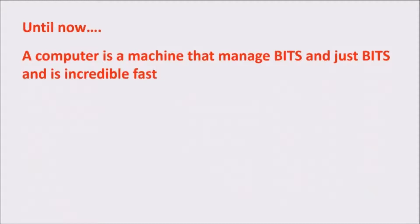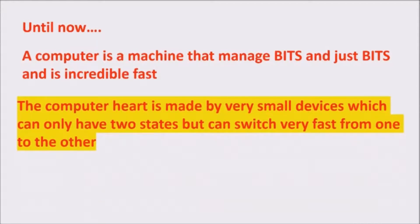So, until now, we learned that a computer is a machine that manages bits and it is very fast. Or, more precisely, that a computer is made by very small devices which can only have two states, but that can switch very fast from one to the other.